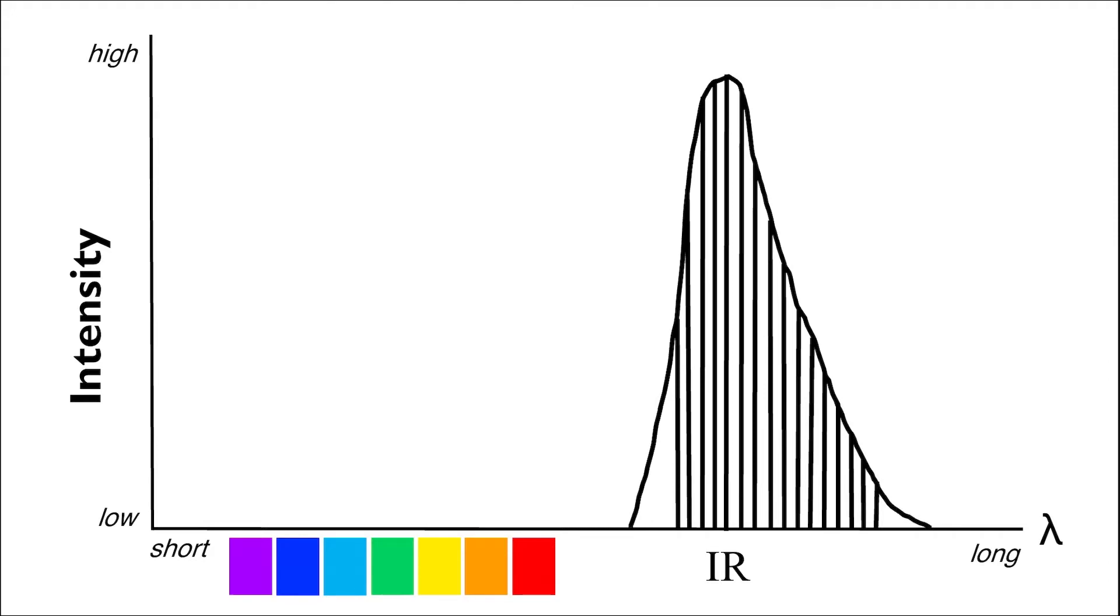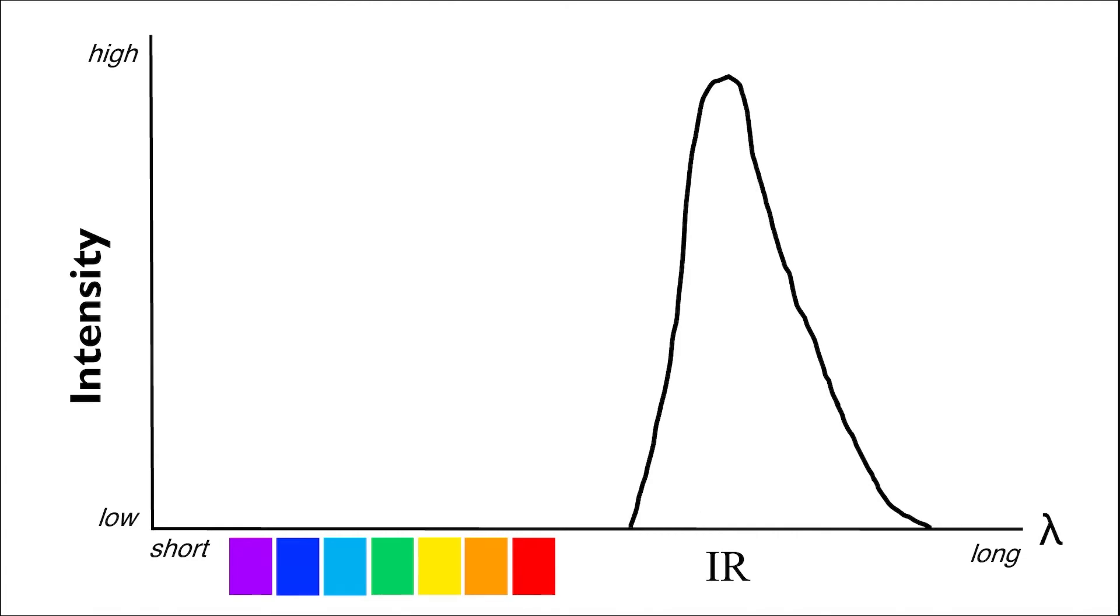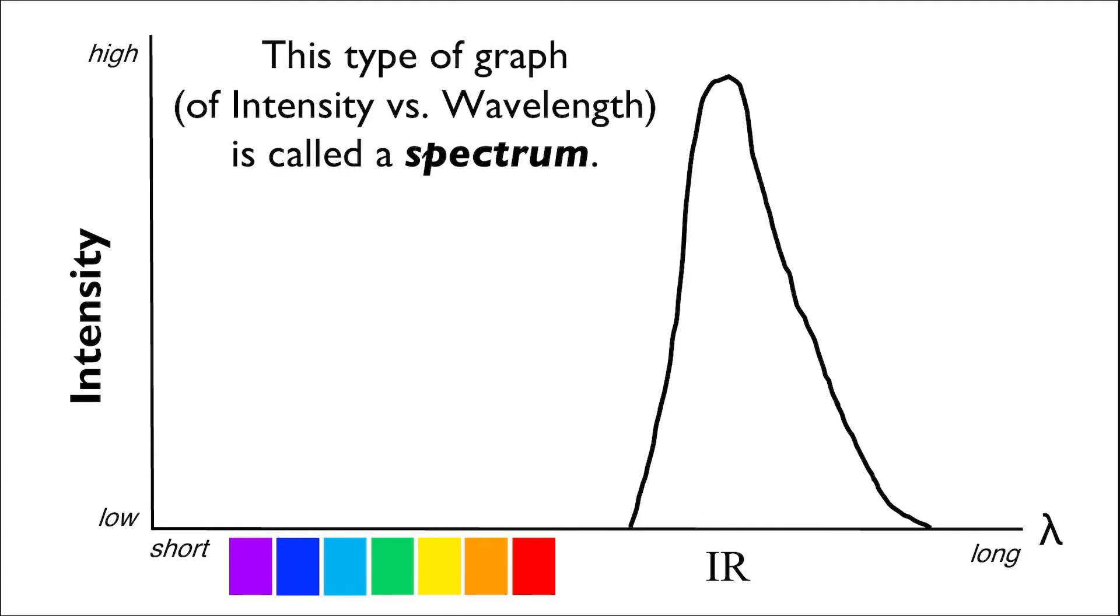A curve that represents the various levels of intensity of light emitted at different wavelengths. Now this type of graph, one of intensity versus wavelength, is called a spectrum.